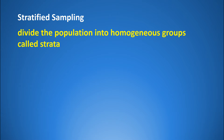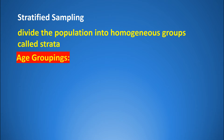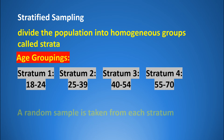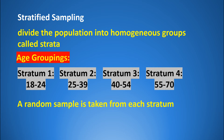Another commonly used probability method is stratified sampling. Here, we divide the population into homogeneous groups called strata, based on a characteristic important to the study. For example, if you believe the population differs by age, you separate it into age groups: stratum 1 ages 18–24, stratum 2 ages 25–39, stratum 3 ages 40–54, and stratum 4 ages 55–70. A random sample is then taken from each stratum. This is called stratified sampling.